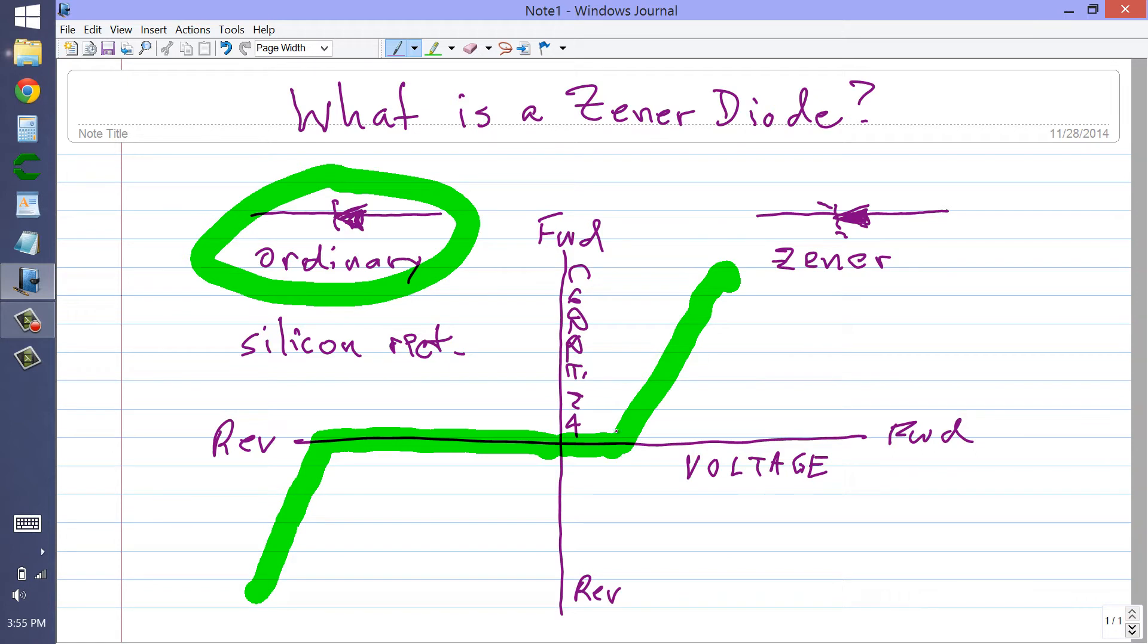It has a forward breakover voltage of about 0.6 volts, and a reverse avalanche voltage that's just simply arbitrarily high, maybe tens or even hundreds of volts depending upon the type of diode.